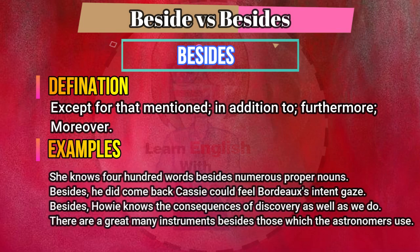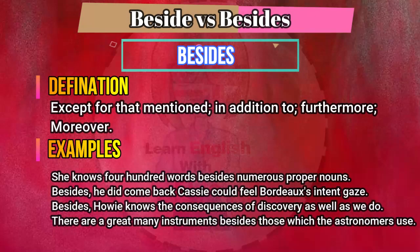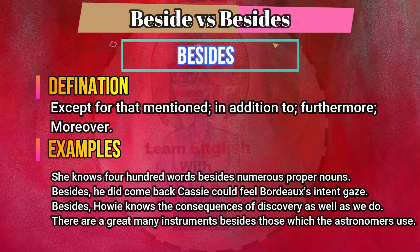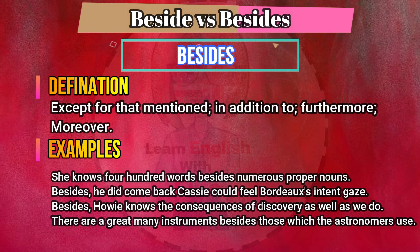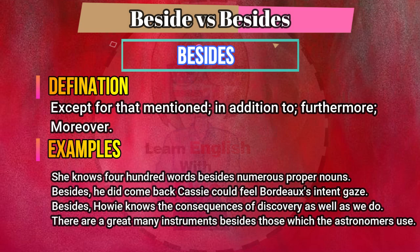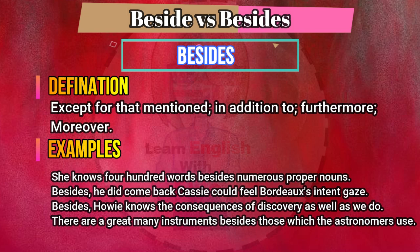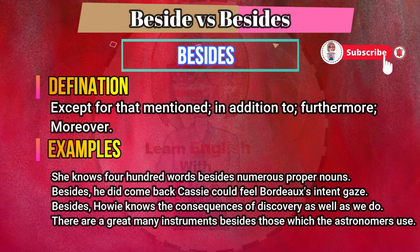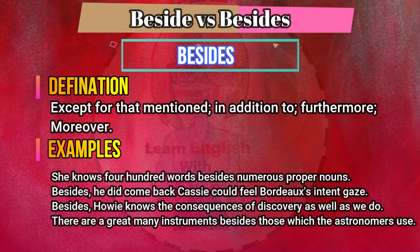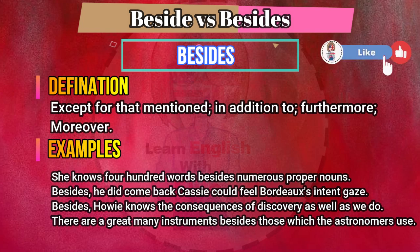And now let me show examples of the word besides in sentences. She knows four hundred words besides numerous proper nouns. Besides, he did come back — Cassie could feel Bordos's intent gaze besides how he knows the consequences of discovery as well as we do. There are a great many instruments besides those which the astronomers use.